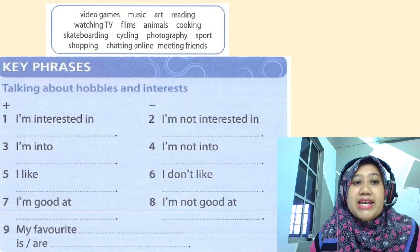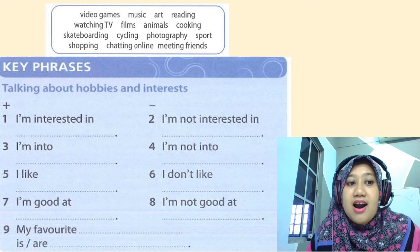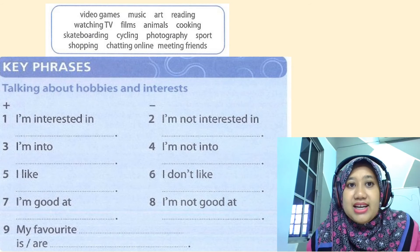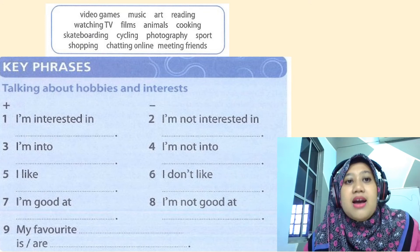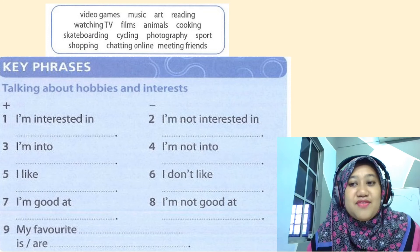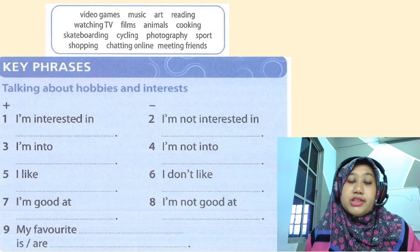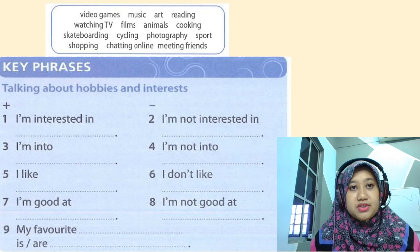For example: I'm interested in music. I'm not interested in music. I'm into video games. I'm not into watching TV. I like cycling. I don't like music. I'm good at chatting online or photography. I'm not good at sports. My favourite video game is PUBG.